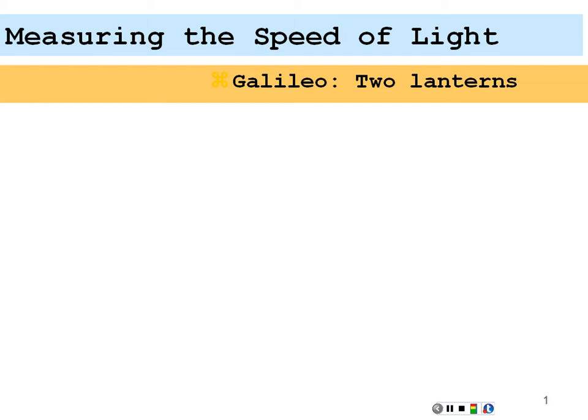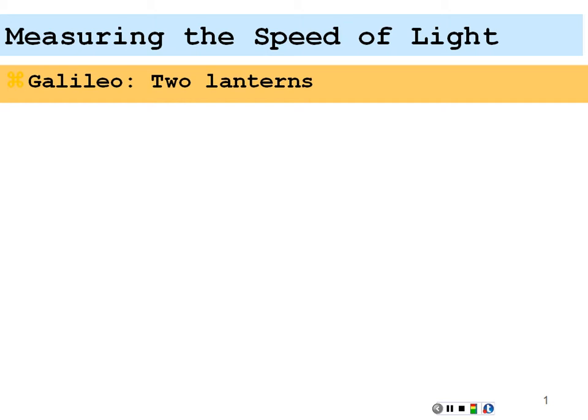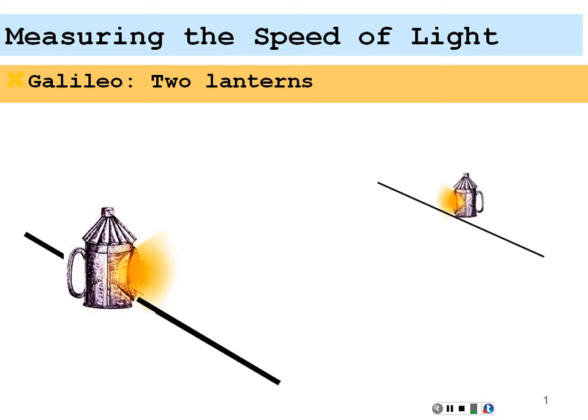There have been several attempts in history to measure the speed of light. One of the first is an attempt by Galileo. Here was the general setup: he had two lanterns separated by 10 kilometers, and the possessor of the first lantern would have it covered. At a specified time, they would start the timer, release the lantern, exposing it so that the second observer 10 kilometers away would see that light. As soon as they saw the light, they would reveal their lantern, so their light would come back to the first observer, and the first observer would see that light and then stop the clock.